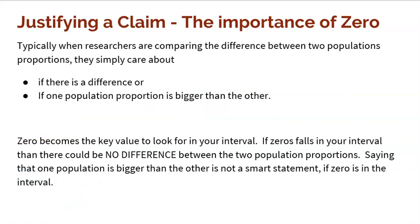And that's where we get into justifying a claim — this is the importance of 0. Typically, when researchers are comparing the difference between two population proportions, they really just care about: is there a difference? Or they're looking for whether one population proportion is bigger than the other. In either of these scenarios, what matters most to the researchers is 0, because 0 becomes the key value to look for.